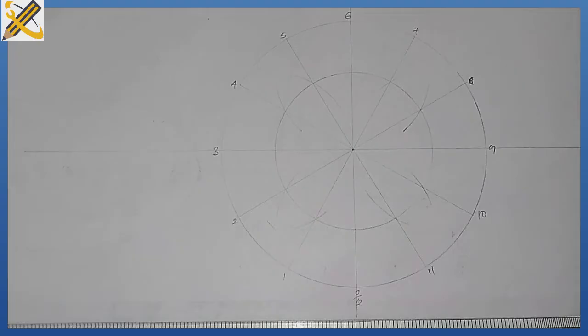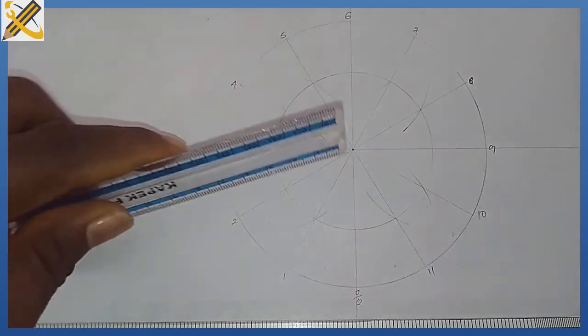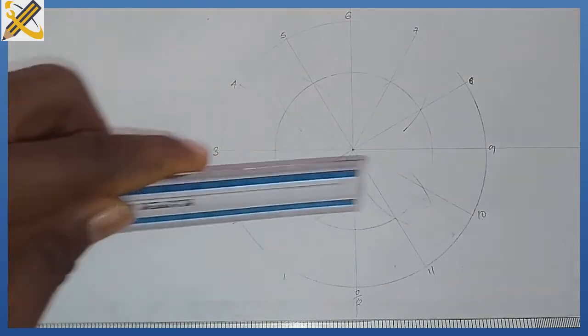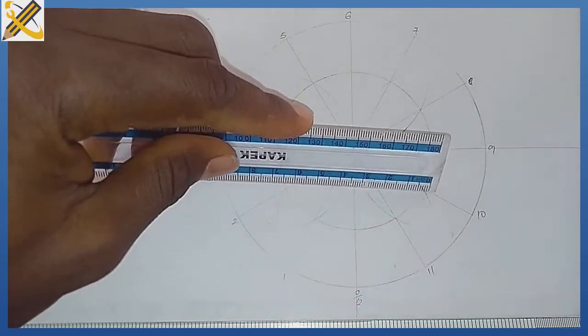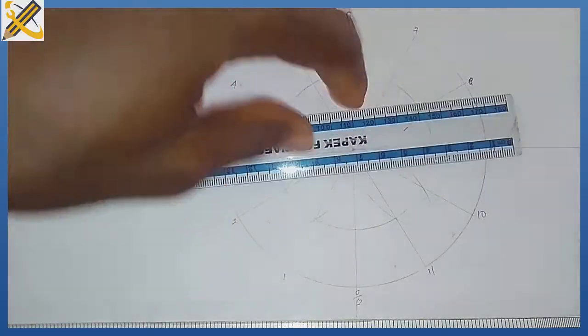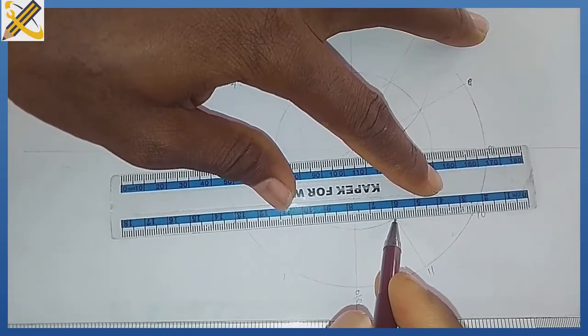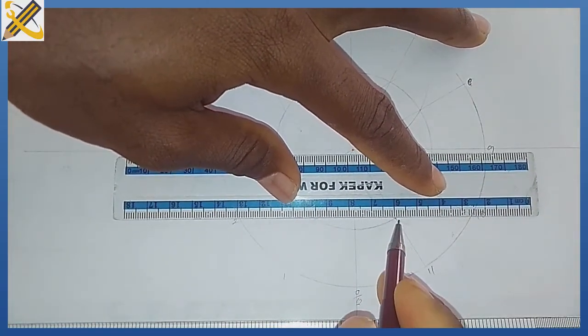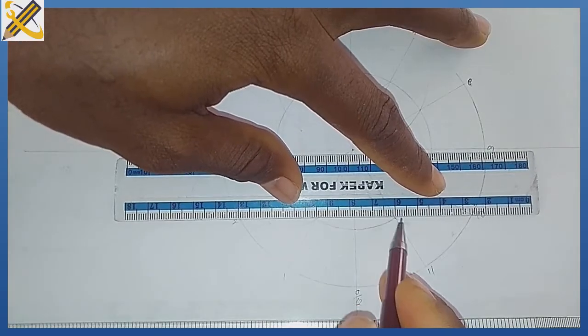Having done that, take note that the horizontal plane of one and eleven lie on the same plane, likewise ten and two. Their horizontal planes lie on the same place. I'm going to draw out a line from the horizontal plane of both figures.